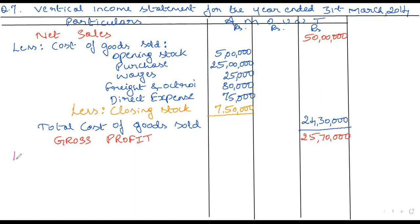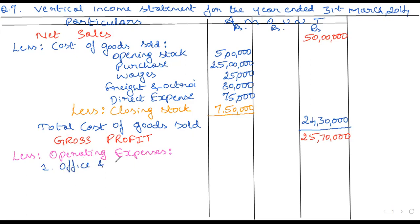The next step is to take the operating expenses. So we write: less operating expenses. Under operating expenses, the first category we consider is office and administrative expense. Take all office-related expenses one by one. Starting with office insurance.